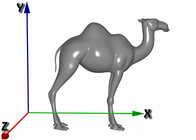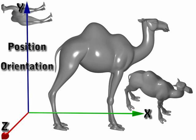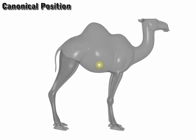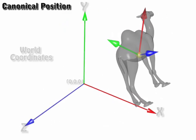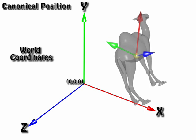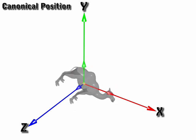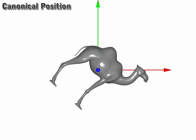We want to somehow measure similarity between shapes while filtering out some irrelevant properties such as the position of the object in space, its orientation, and sometimes size. So we need to bring all the models to some canonical position. We can do this by computing the object's center of mass and principal axes. We then translate the object in 3D space such that its center of mass is at the origin, rotate it so its principal axes align with the normal world coordinate axes, and finally scale the model such that its strongest principal axes will be of magnitude one.